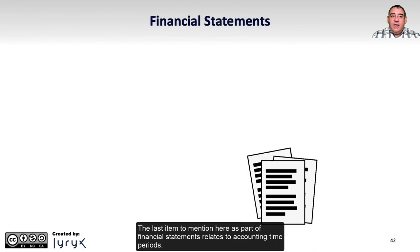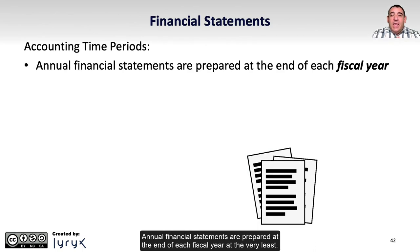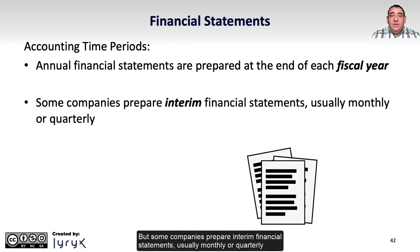The last item to mention as part of financial statements relates to accounting time periods. Annual financial statements are prepared at the end of each fiscal year at the very least, but some companies prepare interim financial statements, usually monthly or quarterly.